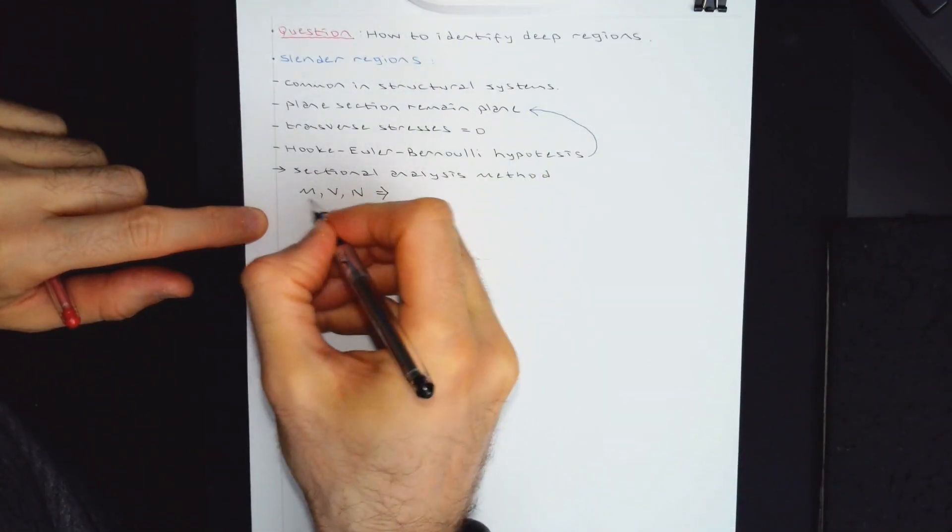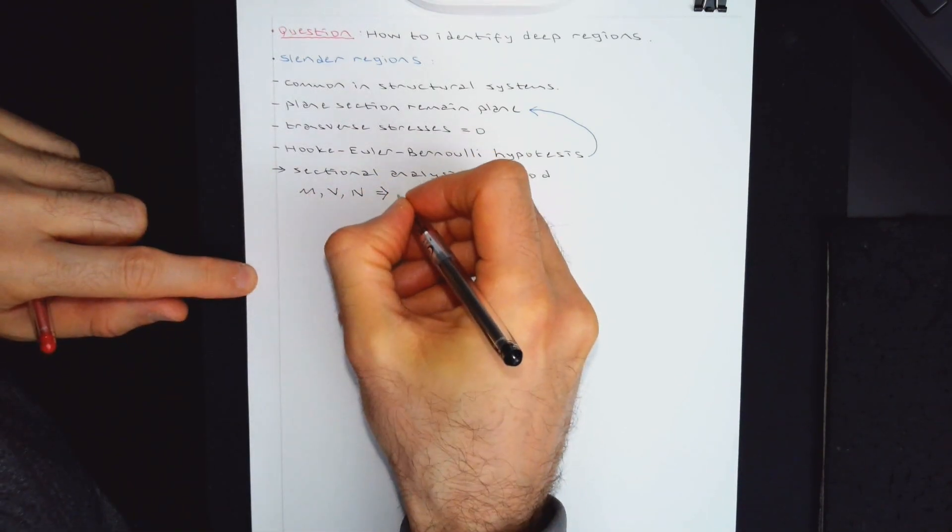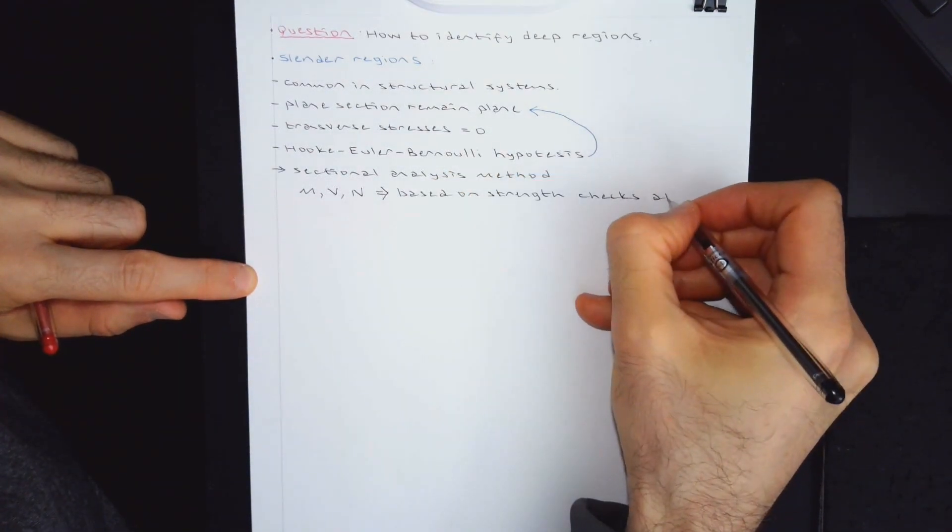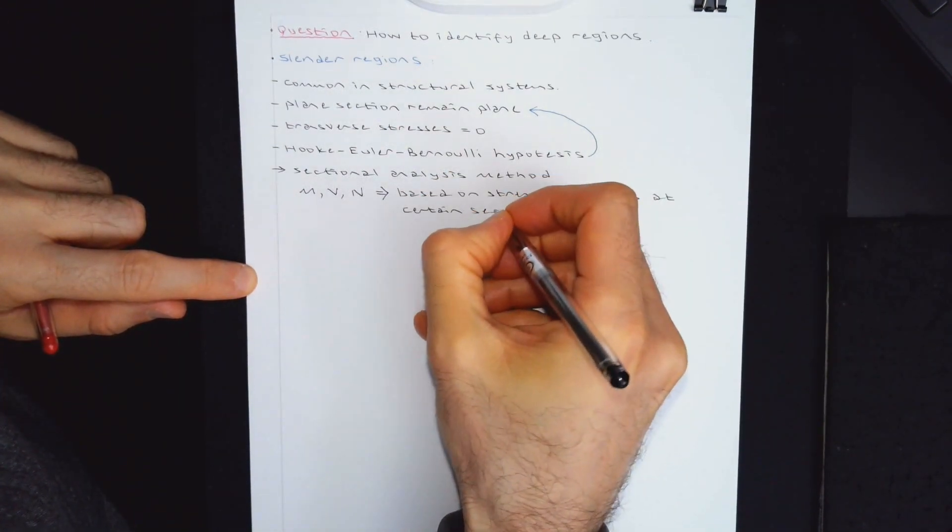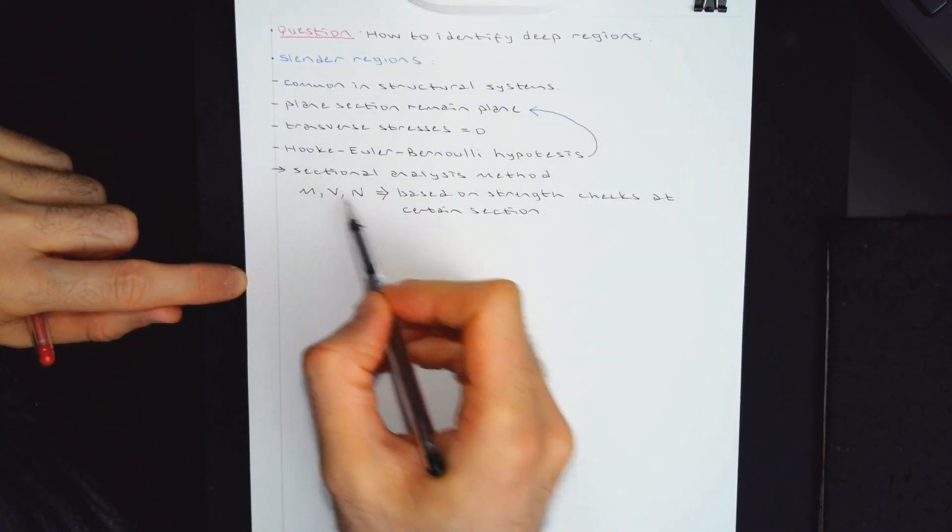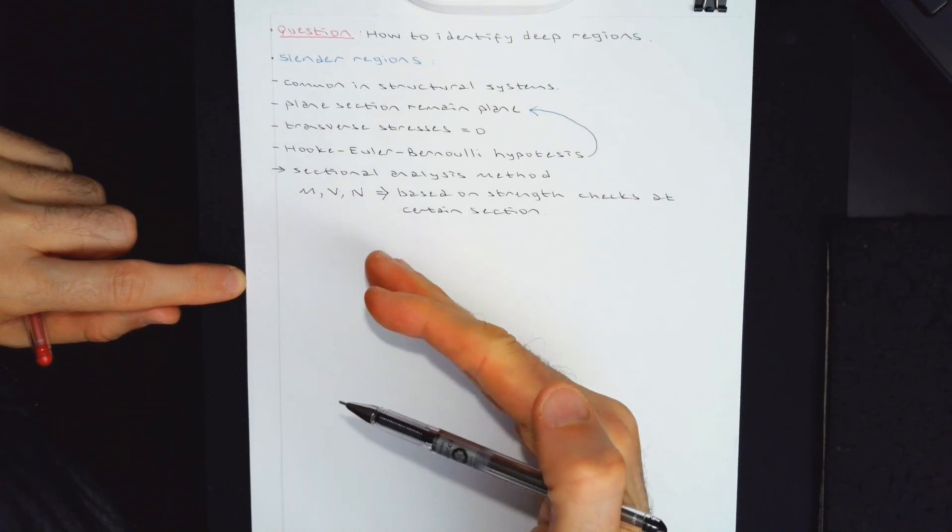So sectional method uses the concept of moment, shear force, axial force, and it is based on strength checks at certain sections. For example, mid-span. So this is section by section. You draw moment, shear, axial force diagrams.